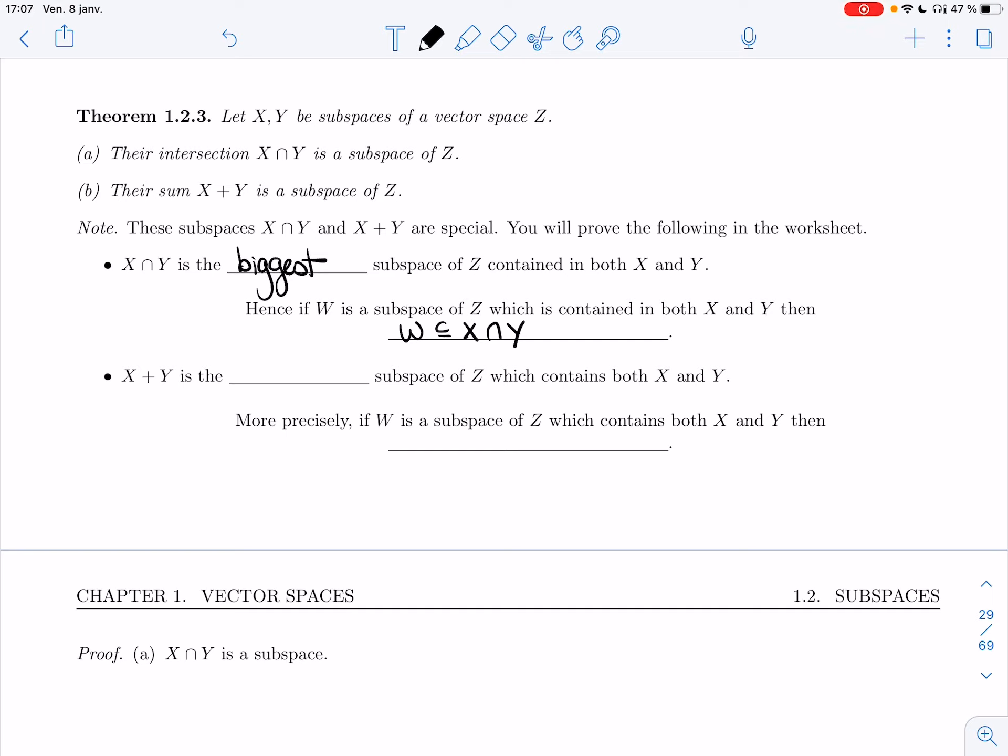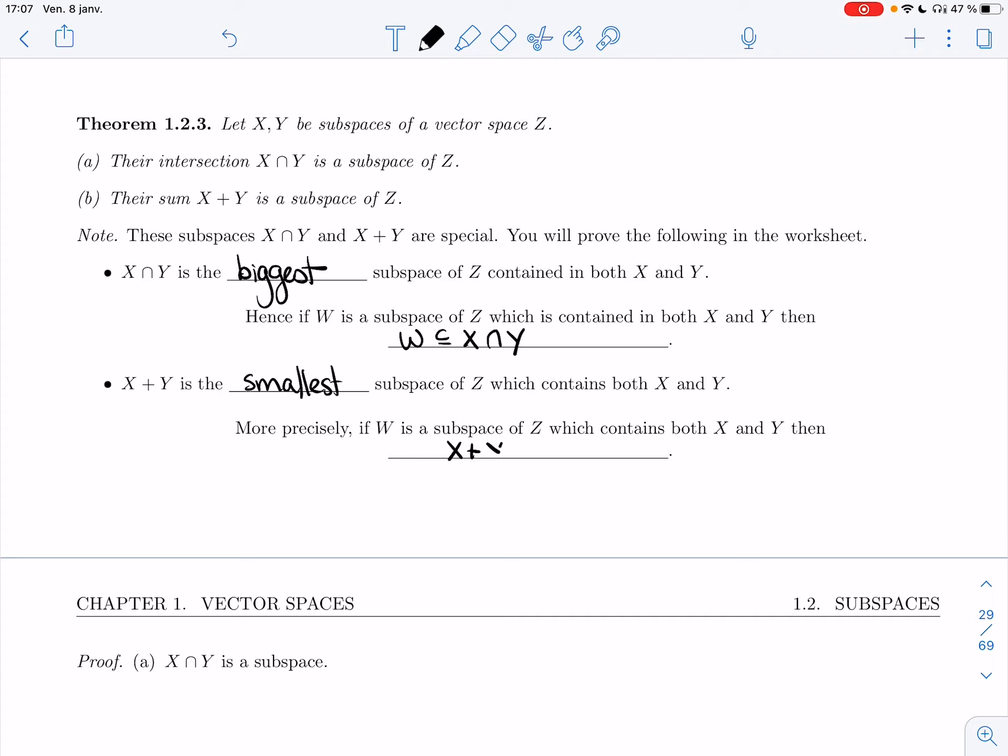X plus Y is actually the smallest which contains both X and Y. So if W is a subspace which contains both X and Y, then X plus Y is actually inside W.